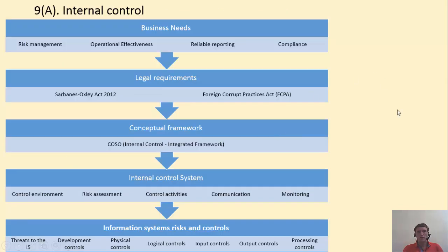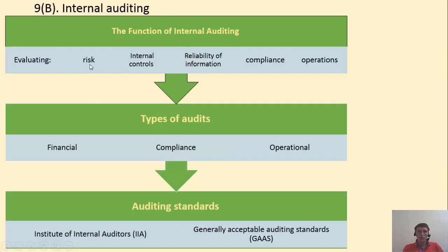Finally, we move to internal control and internal auditing. In internal control, we discuss the business need for internal control, including risk management, operational effectiveness, reliable reporting, and compliance — as well as legal requirements including the Sarbanes-Oxley Act and the Foreign Corrupt Practices Act. We then discuss the conceptual framework most commonly used in developing internal control systems, which is the COSO model, and how we develop a detailed internal control system. As an application, we discuss information systems and how to assess their risks and create controls. For internal auditing, we talk about the function of internal auditing and how it complements internal controls, what internal auditors do specifically, the types of audits they perform — financial, compliance, and operational audits — and the auditing standards they follow.